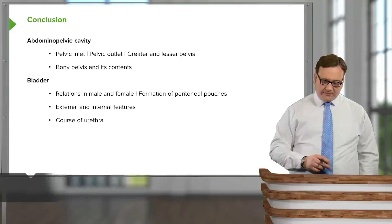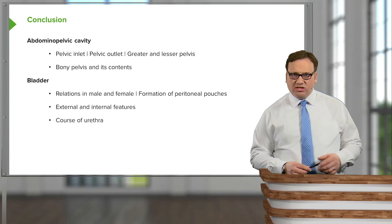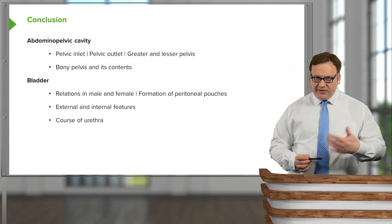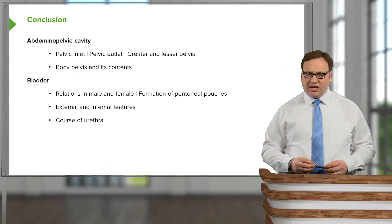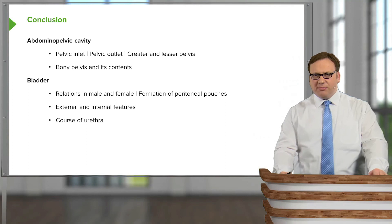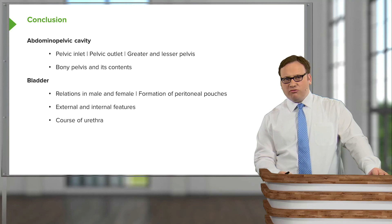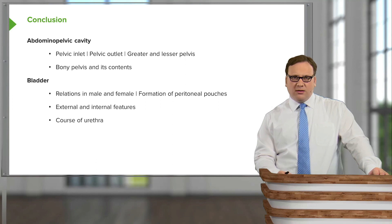We'll return to the rectum and anal canal in more detail when we look at the perineum. In summary, this lecture introduced the abdominopelvic cavity, the pelvic inlet and outlet, and the greater and lesser pelvices. We looked at the bladder's relations in both male and female, peritoneal pouches, bladder structure, and the urethra's course. We then examined the male reproductive organs, tracing the gamete's pathway from the testis to the penis via the ductus deferens, seminal vesicles, ejaculatory duct, and prostate, before concluding with an overview of the rectum.